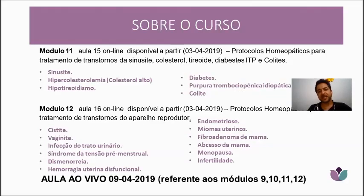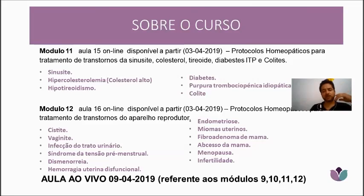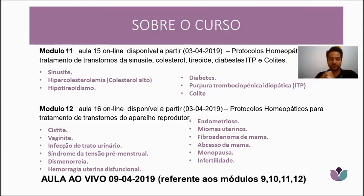Module 11, available April 3rd, covers homeopathic protocols for sinusitis, cholesterol, hyperthyroidism, hypothyroidism, thyroid conditions, diabetes, colitis, and immune/inflammatory conditions including thrombocytopenic purpura — an autoimmune disease where the patient has platelet malformation, causing significant hemorrhaging, which homeopathy can help considerably.